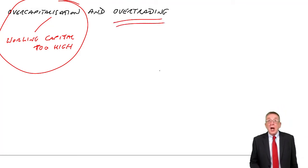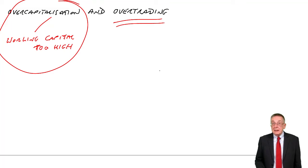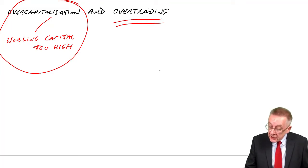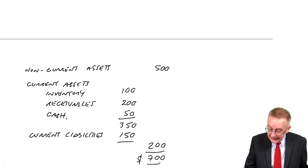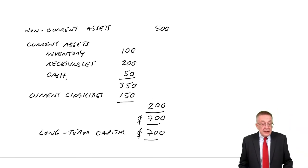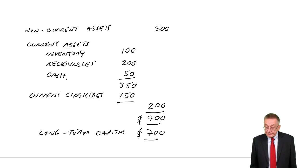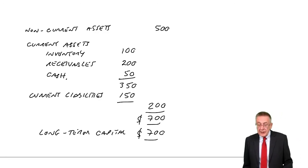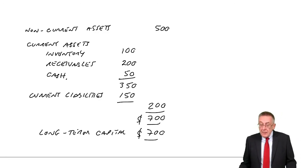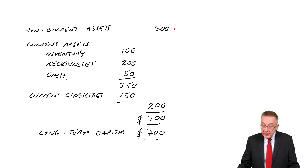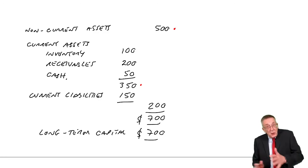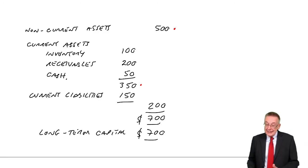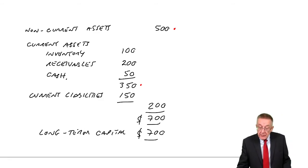What I need to say more about is overtrading, which is somewhat different. To explain what it is, there's a little illustration which I've copied down on the screen. What you've got there, effectively, is a stepped financial position. This company has non-current assets of 500, current assets of 350, so total assets are 850. They've got long-term capital of 700 and liabilities of 150 — again, 850.